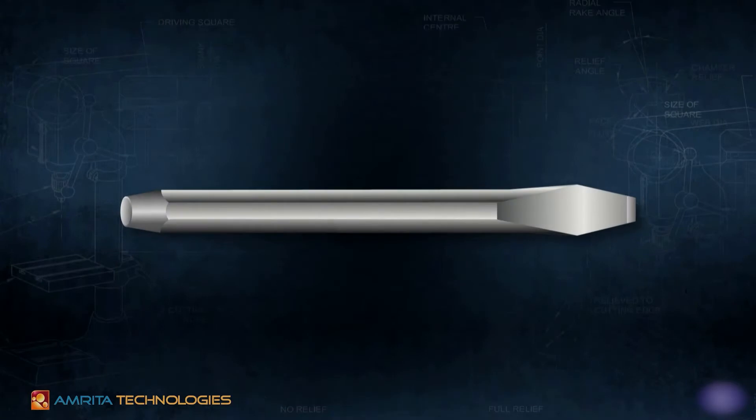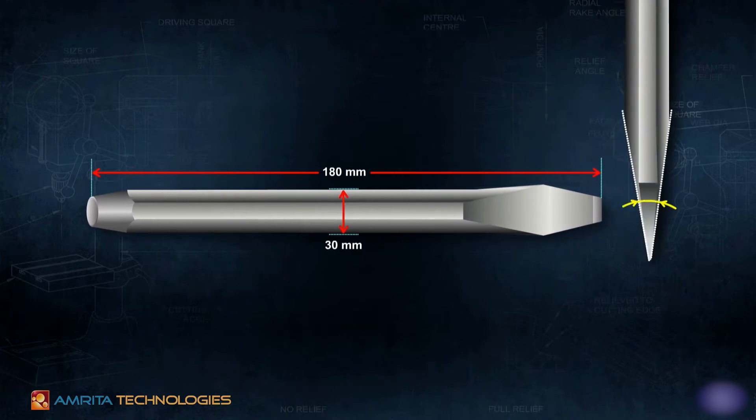Now let's see the dimensions of the chisel to be forged. The total length of the chisel is 180mm and the crosswise length of the flat portion is 30mm. The cutting angle of the chamfer is 60 degrees and the chamfered end size is 15mm by 12mm.